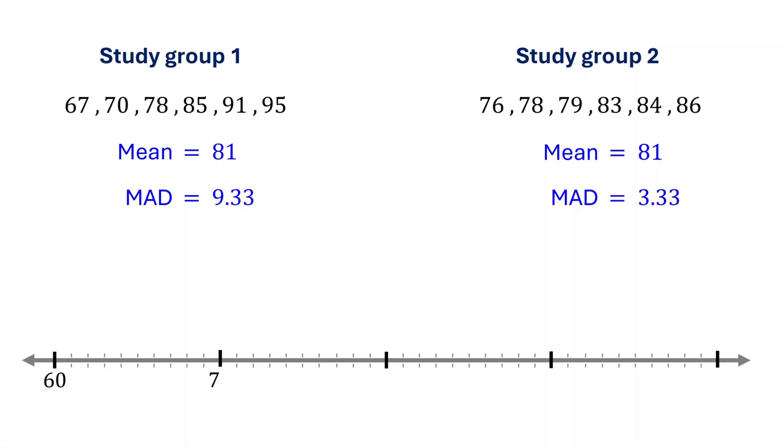Let's visualize this on a number line to see the difference clearly. This vertical line represents the mean, which is 81. These dots represent the first group test scores. And these dots represent the second group test scores.